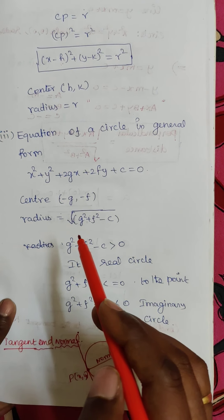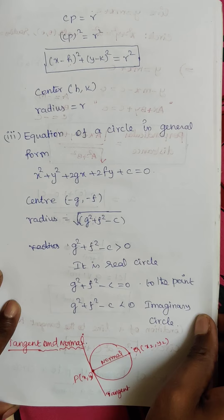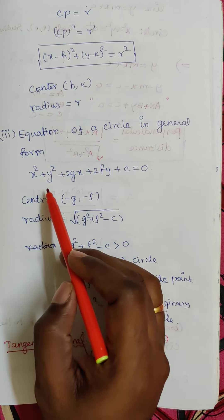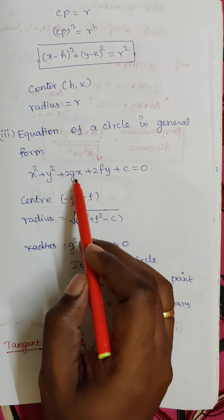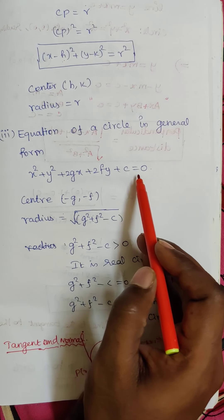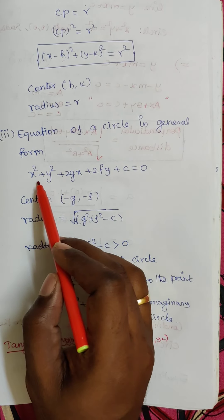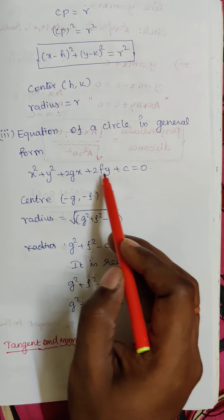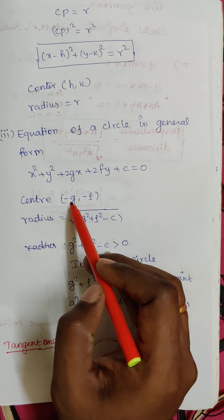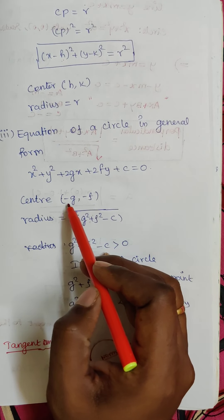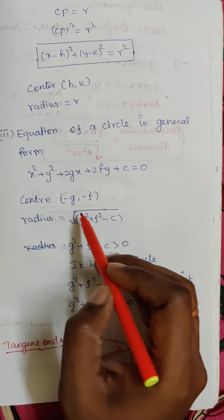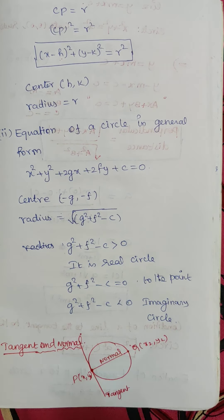The next is the equation of a circle in general form: x squared plus y squared plus 2gx plus 2fy plus c equals 0. This is the general equation of a circle. Here, the center is (−g, −f) — this is very important, as we will use this formula in exercise problems.